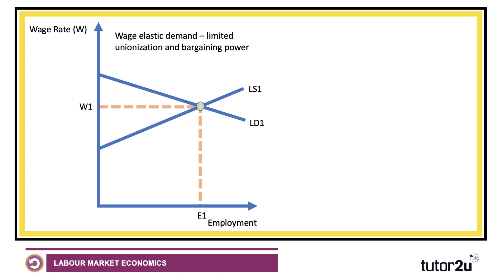So how do we use labour demand and supply diagrams to illustrate the possible impact on bargaining? Here's a situation where the labour demand curve is fairly elastic — it's wage sensitive, so employers are sensitive to the wage they pay with respect to the number of people they employ. The labour supply curve is drawn as upward sloping and the wage is W1 in equilibrium.